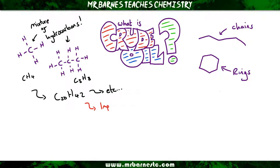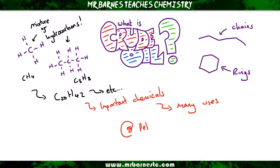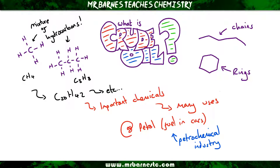Crude oil is a massively important chemical — it is used in almost anything that you can think of. The major use is that it's a fuel in our cars, in petrol. Petrol is a part of crude oil that we extract, and we use it to fuel our cars in the petrochemical industry. But there are so many other uses, and as we go on through this topic you will learn what those other uses are.